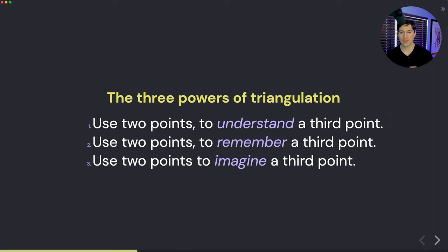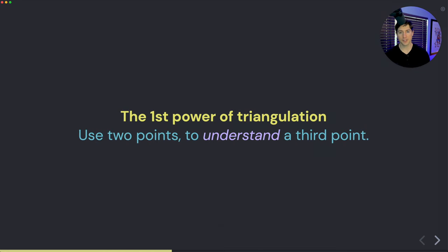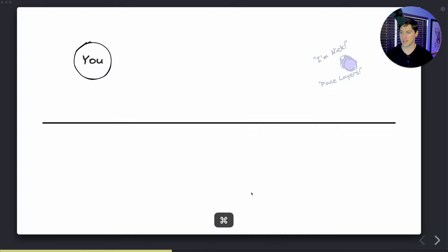So now let's go into examples visually to see what this might look like. The first power of triangulation is that we can use two points to understand a third point. What does that look like exactly? Let's see.